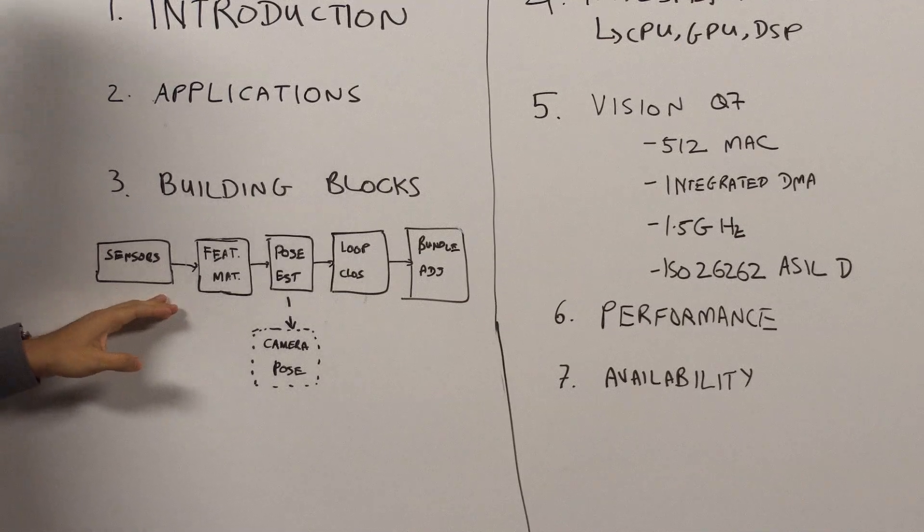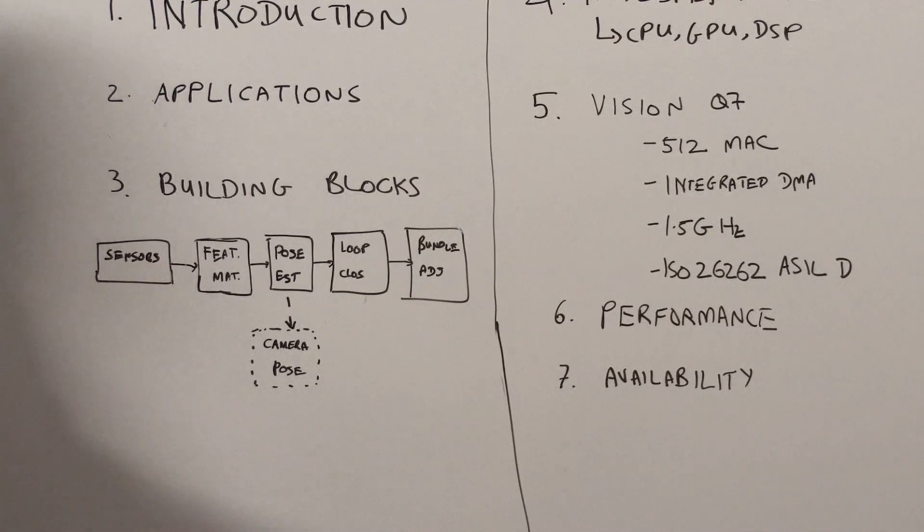So we start first with the sensors. These can be RGB, depth, stereo, time of flight, a variety of different sensors that can be used to capture data about the environment.